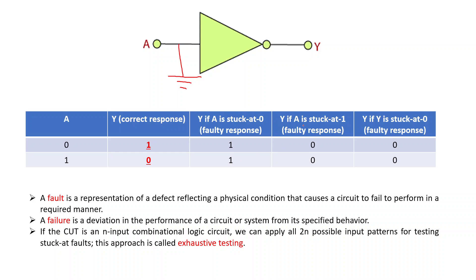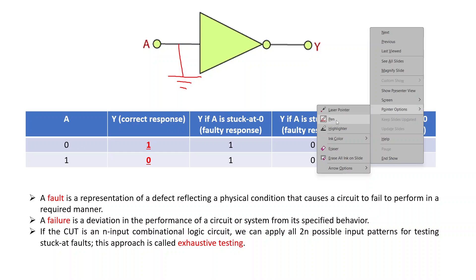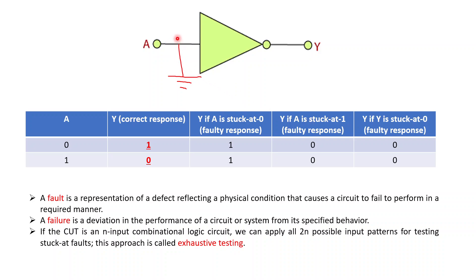Similarly, we can have another fault at A which is stuck at 1. A can either be 0 or 1. If A is stuck at 1 and always logic high, then Y will always be logic 0 in both cases. The fault can occur at input or output. If Y is stuck at 0, Y value will be 0 in both cases. These are the faulty responses for A stuck at 0, A stuck at 1, and Y stuck at 0.